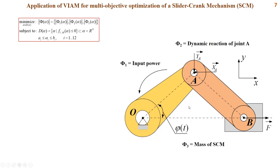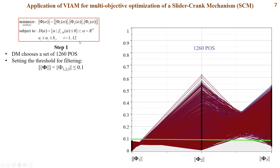Next, let's see an application of VIAM for multi-objective optimization of a slider-crank mechanism. The aim of the problem is to simultaneously minimize three objective functions: input power, dynamic reaction force R, and the mass of the mechanism, subject to manufacturing and structural conditions. In step 1, when the POS space reaches 1,260 possible options, the interaction process begins with checking conditions set by the DM — whether there exists a solution in this POS better than those 1,260 alternatives.